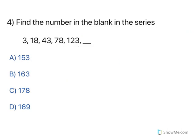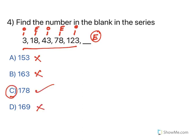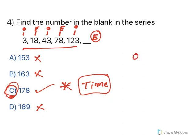Looking at the sequence, another useful technique is odd-even pattern recognition. In the series: odd, even, odd, even, odd — the next one must be even. You can eliminate options that are not even. Without calculating differences, by observing the odd-even alternating pattern you can identify the correct answer. This saves a lot of time, though it comes with practice.